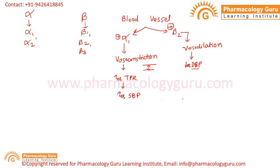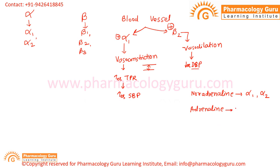Now let us see some inherent sympathomimetic molecules present in our body. The major two are noradrenaline and adrenaline. Noradrenaline has an agonistic effect on alpha 1 and alpha 2 receptors, while adrenaline has an effect on all five receptors: alpha 1, alpha 2, beta 1, beta 2, and beta 3.